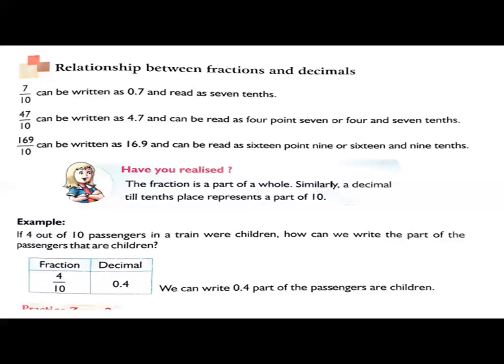How to convert as decimal? 4 by 10 means 0.4 because 10th place. So 0.4. So the passengers that are children can be written as in fraction 4 by 10 and in decimal as 0.4.